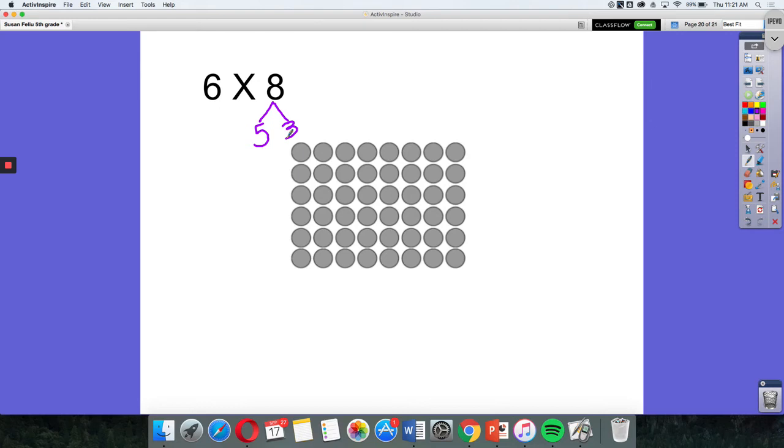So again, this looks like our number bonds that we used maybe in first grade. So I'm going to take that 6, and I'm going to multiply it by my 5, giving me 30. And then I'm going to take my 6 again, and I'm going to multiply it by my 3, giving me 18. So when I add up my partial products, I'm going to get 48.